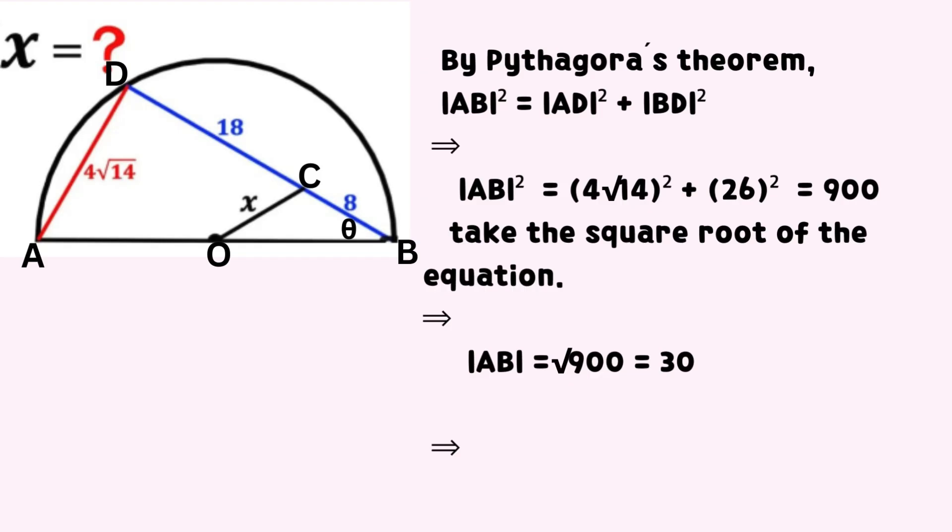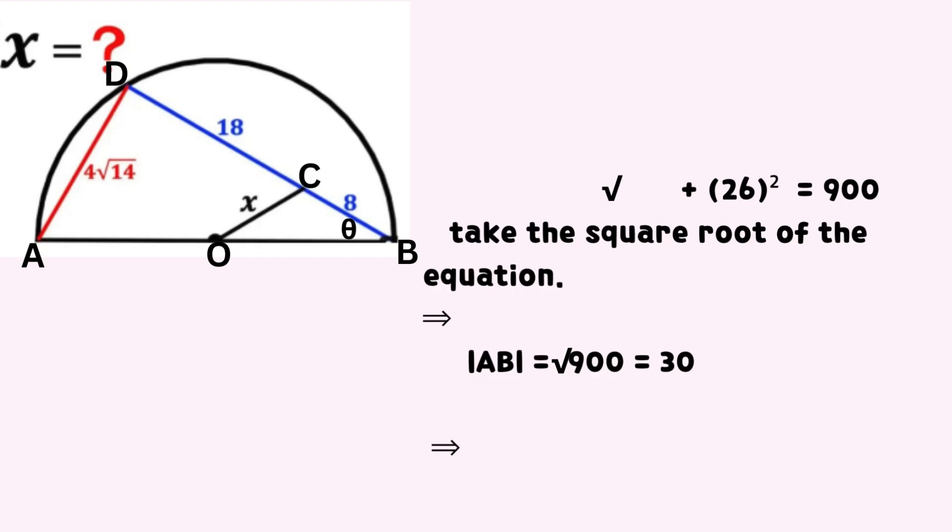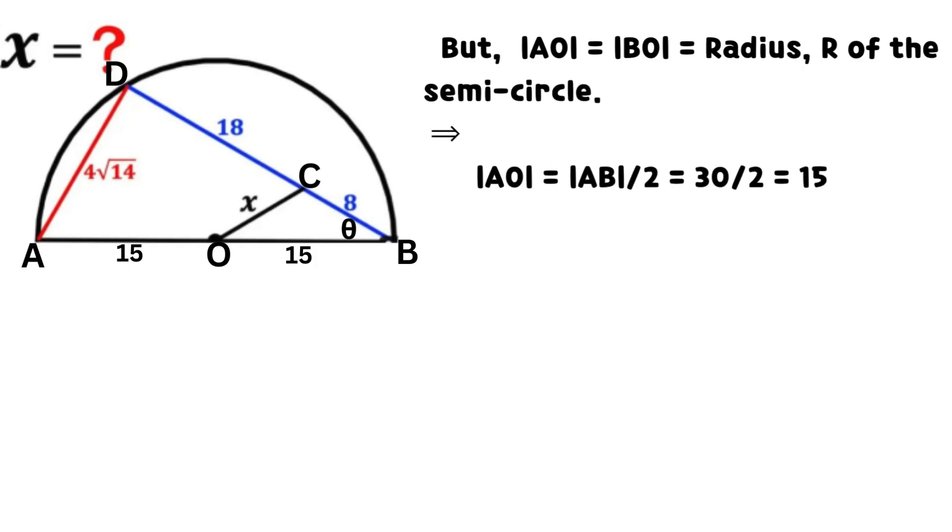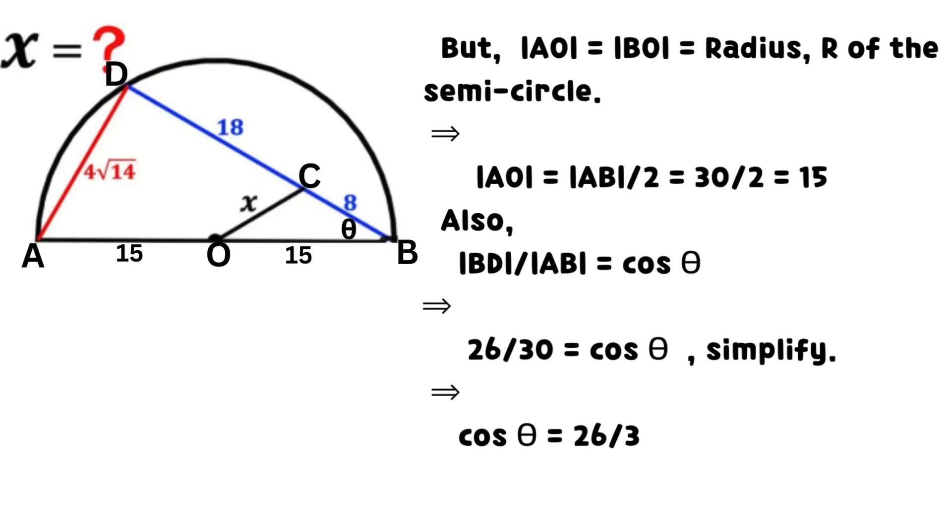But line AO equals line BO, which equals the radius R of the semicircle. Line AO equals AB divided by 2, which equals 15.